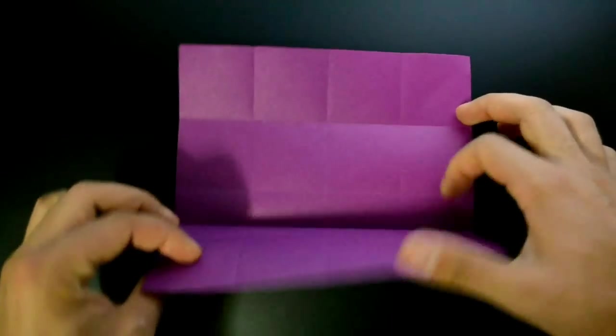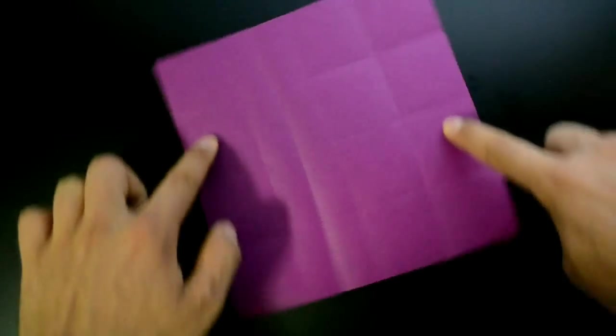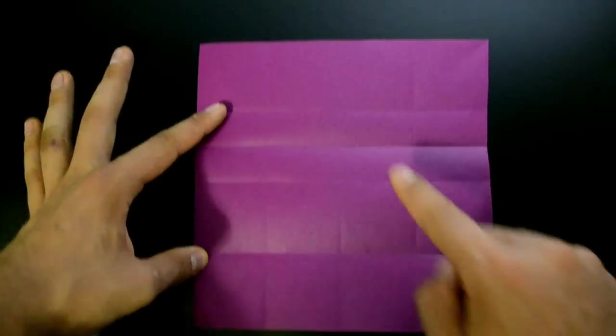Unfold, rotate now in this position, and repeat the same step, the bottom edge to the first horizontal crease.